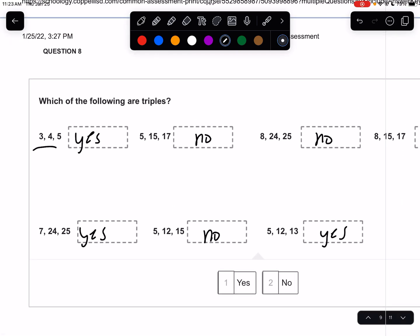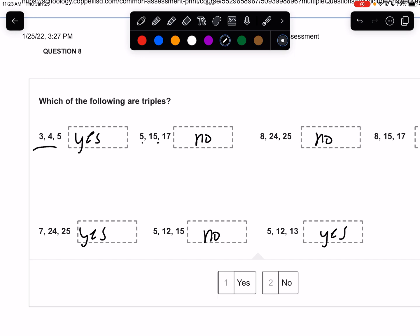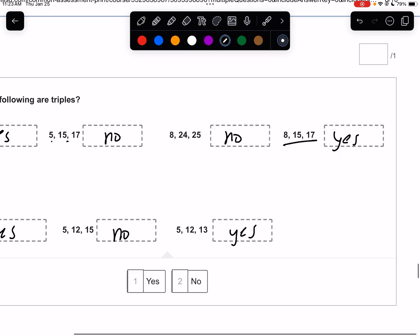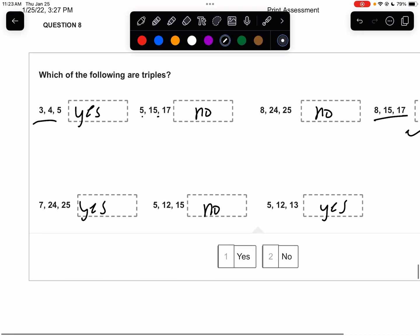All right. Going forward. That's a hard question, by the way. I know. Which one of these are triples? 3, 4, 5? Yes. 8, 15, 17? Nope. 8, 24? Nope. 7, 24, 25? Nope. 8, 15, 17? Yes. 7, 24, 25? Yes. 5, 12, 13? Nope. 5, 12, 13? Yes.